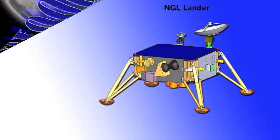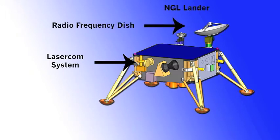The Lasercom terminal aboard the NGL Lander allows it to communicate in a very high data rate with the LNCR communications satellite. The Lasercom terminal is capable of transmitting data at a much higher data rate than the radio frequency dish also on the spacecraft.